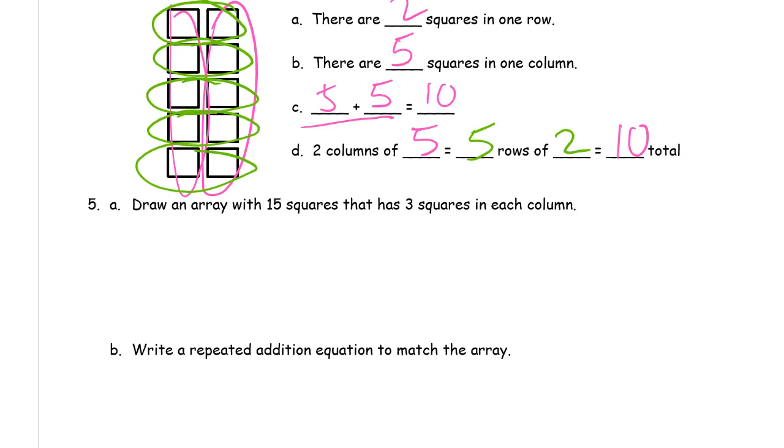Draw an array with 15 squares that has 3 squares in each column. Okay, so if there's 3 squares in a column, you could just start by drawing the first column with 3 squares in it. Be careful. Don't start drawing a row with 3. This is a column. It says column. So this is one of those things where you've got to slow down and make sure you're making a column here.